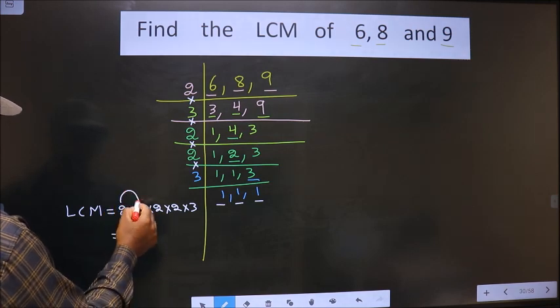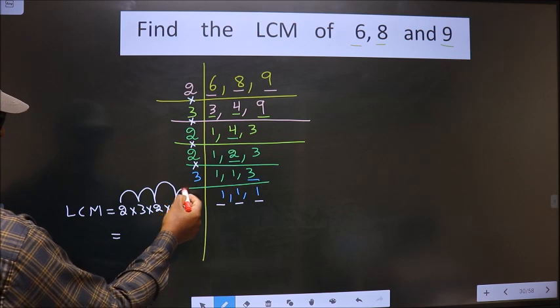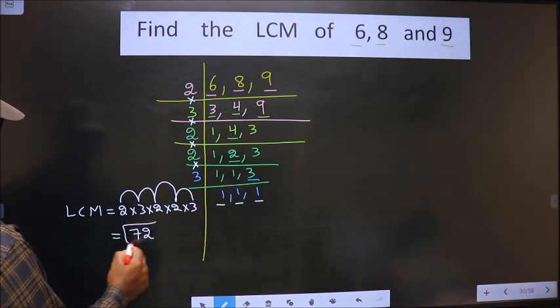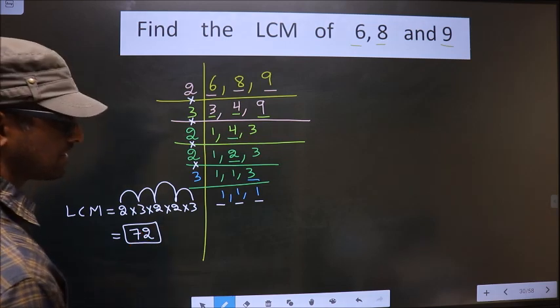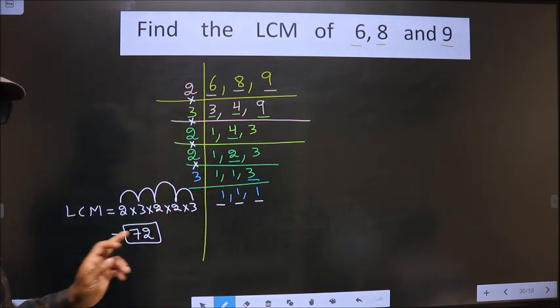So 2 times 3 is 6. 6 into 2 is 12. 12 into 2 is 24. 24 into 3 is 72. So this is our answer. Am I clear?